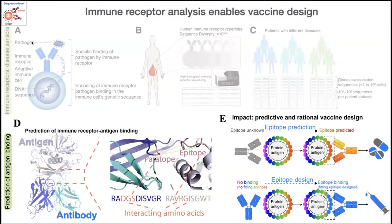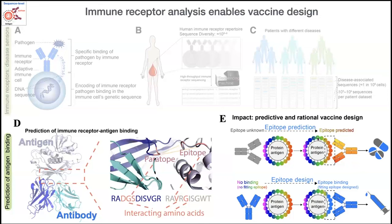At the sequence level, we want to predict binding — and this occurs in 3D space. The binding interface between antibody and antigen involves the paratope and epitope; interacting residues may be close in 3D space but distant in sequence space — long-range dependencies that need to be resolved. Use cases include predicting where an antibody would bind on the antigen, and designing vaccines such that they are bound by our naïve antibody repertoire.